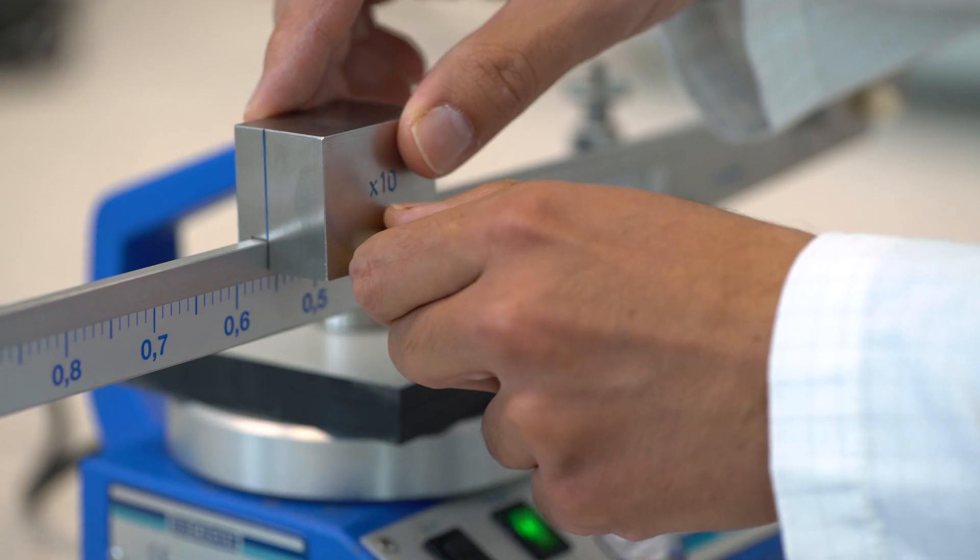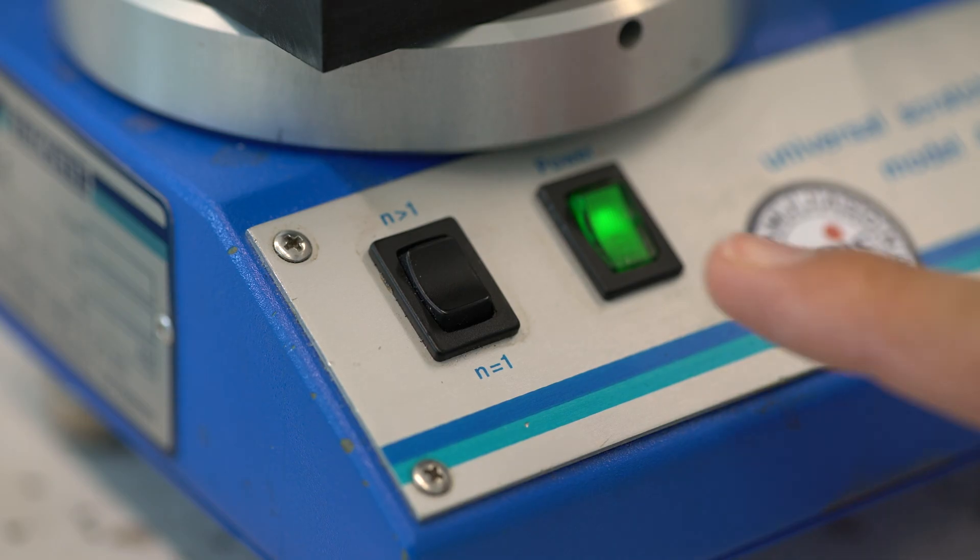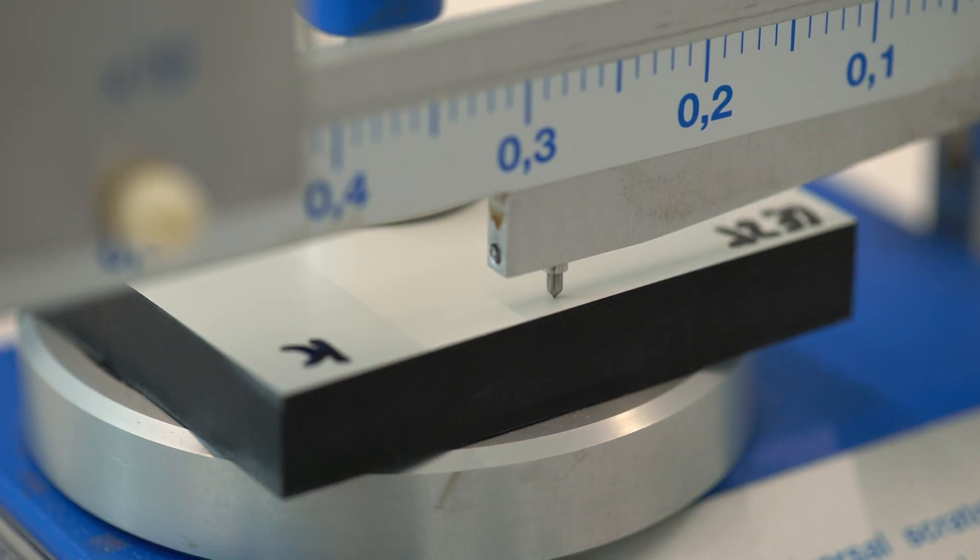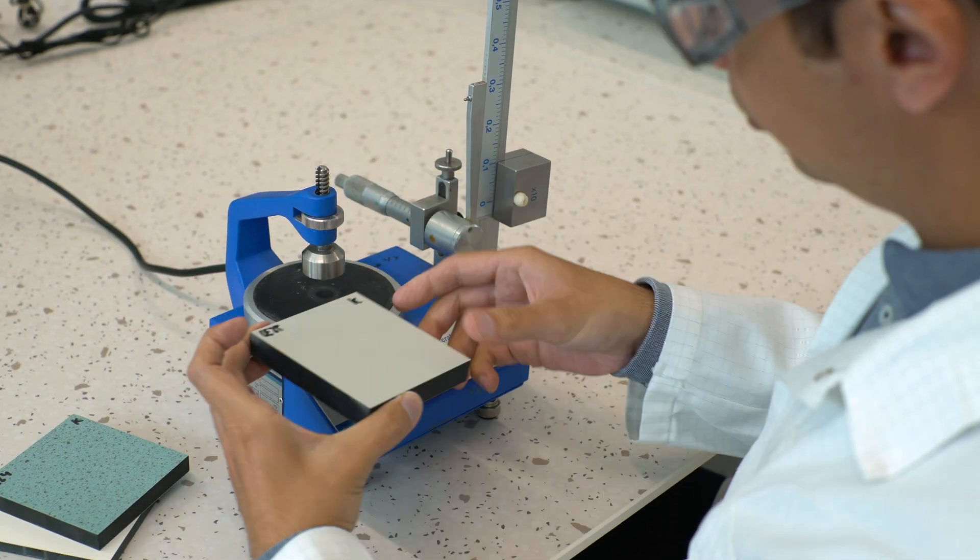Resistance to scratching is an important test to characterize the quality of the surface finish in TopLab products. During testing a diamond tip needle is used to apply an incrementally increasing load on the surface of a sample.